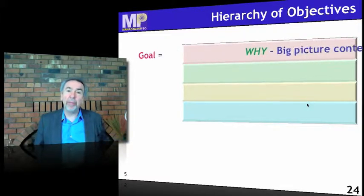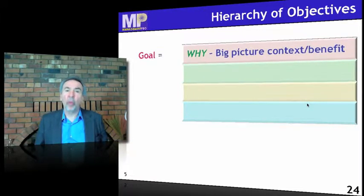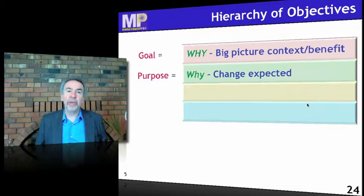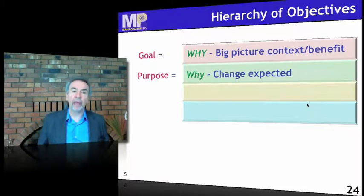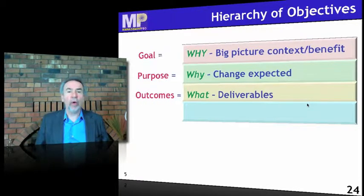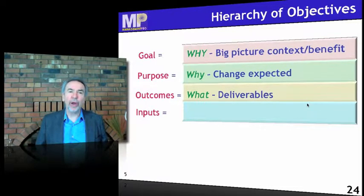Goal: the big picture, the why we're doing this, the context, the benefit. Purpose: a lower-level objective that talks about the change expected after you've done the project. Outcomes: what specifically we can deliver or make happen. Inputs are the tasks and resources to get there.